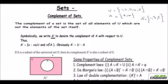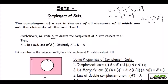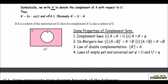If A is a subset of universal set U, then A complement is also a subset. You can see in this example: set A is a subset made with the two elements 2 and 4. And A complement is also a subset because it takes the elements 1, 3, and 5 from the universal set to form set A complement. So if a set is a subset of a universal set, then A complement will also be a subset of the universal set.